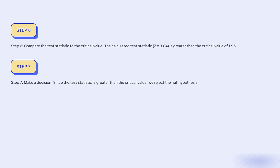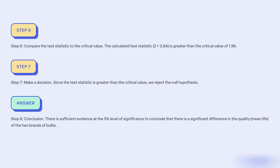Step 7: Make a decision. Since the test statistic is greater than the critical value, we reject the null hypothesis. Step 8: Conclusion. There is sufficient evidence at a 5% level of significance to conclude that there is a significant difference in the quality mean life of the two brands of bulbs.